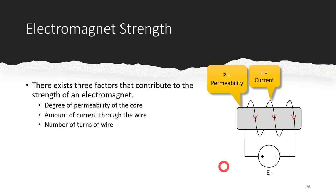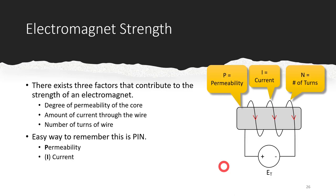Finally, it's the number of turns of wire. If you have more turns, you're concentrating more and more electromagnetic force in that center bar. If we had 1,000 turns, we would have a certain strength magnet. If we doubled it to 2,000 turns, it would effectively double the strength of the magnet in a perfect environment. The last letter in our three-letter acronym is N for number of turns. Remember the acronym PIN when asked about electromagnetic strength: P for permeability, I for current, and N for number of turns.